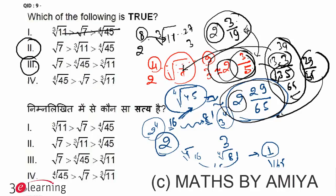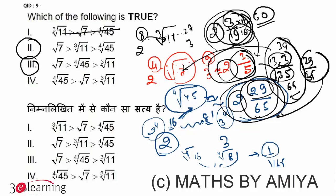Now we need to compare 3 upon 19 and 29 upon 65. Multiplying 3 upon 19 by approximately 10 gives 30 upon 190, versus 29 upon 65. The denominator 190 is much larger, so the cube root of 11 should be the least value. The answer to this question is option number 3.